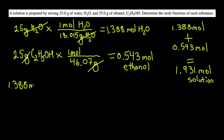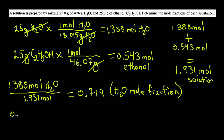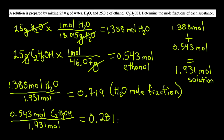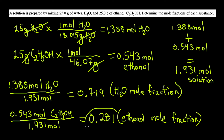To calculate mole fraction, divide the moles of each substance by the total moles of solution. For water: 1.388 moles divided by 1.931 moles gives a mole fraction of 0.719. For ethanol: 0.543 moles divided by 1.931 moles gives a mole fraction of 0.281. Mole fraction is simply a comparison of how many moles of one substance you have versus the total — here we have way more water in moles compared to ethanol.